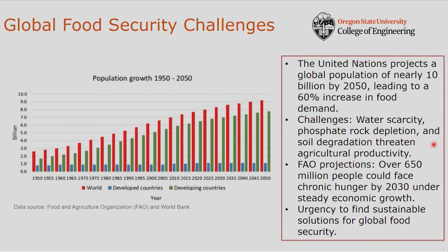The major motivation behind our project is global food security challenges. According to the United Nations, by 2050 the global population will reach about 10 billion people, meaning we need to produce 60% more food to meet this demand. However, challenges such as water scarcity, phosphate rock depletion, and soil degradation make this very hard. According to the Food and Agriculture Organization projection, over 650 million people could face chronic hunger if we continue as we are today.